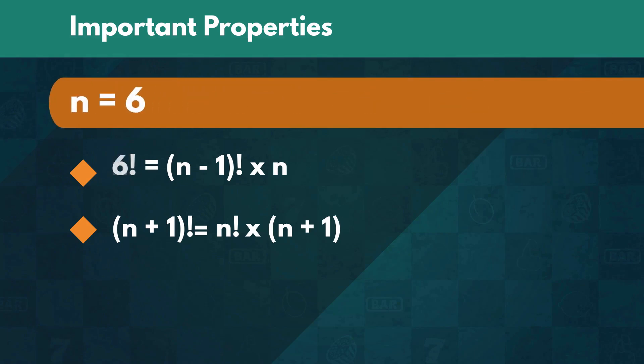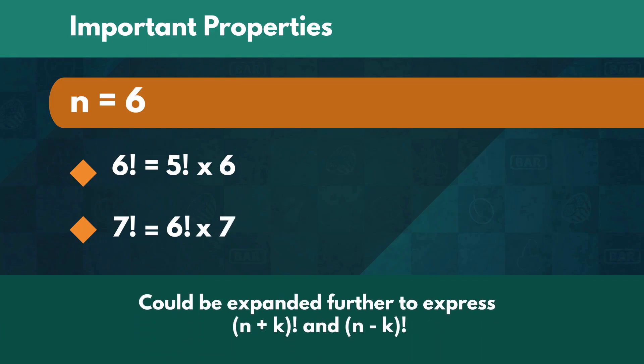For example, 6 factorial equals 5 factorial times 6. In the same way, 7 factorial equals 6 factorial times 7. This notion can be expanded further to express n plus k factorial and n minus k factorial.